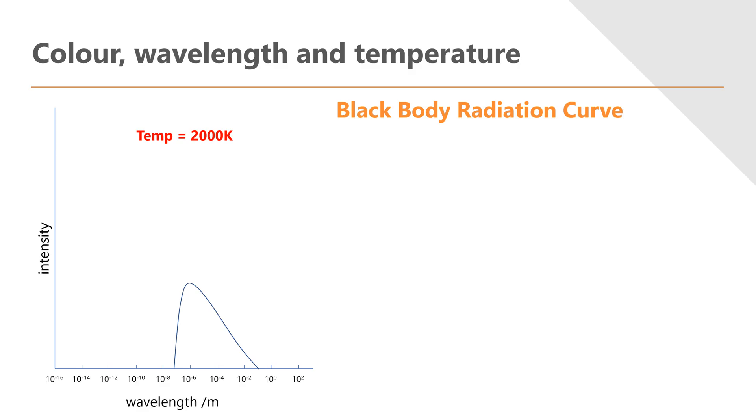So if I were to draw a graph showing the different wavelengths and the intensities at which they're being emitted for a black body radiator - and a black body radiator is just a perfect absorber and emitter of thermal radiation - then here we can see for a temperature of 2000 kelvin I get this lovely curve, and we call this a black body radiation curve.